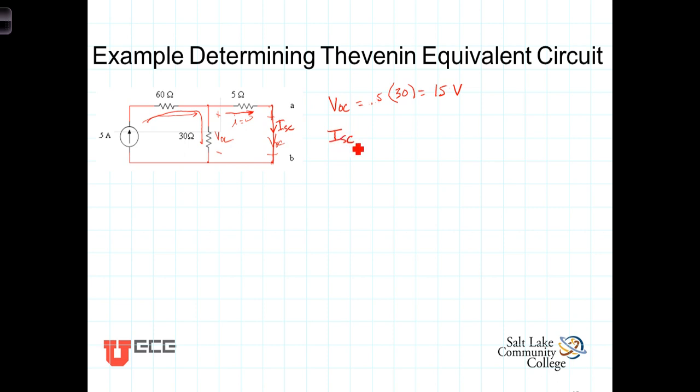So using current divider, we can calculate short circuit current directly. I short circuit is equal to 0.5 times, and remember from the current divider, the term that goes in the numerator is the resistance in the other branch. So that would be 30 ohms divided by the sum of those two, 30 plus 5 is 35 ohms. And we get then that the short circuit current is equal to 0.4286 amps. And then R Thevenin is equal to V open circuit divided by I short circuit, which is 15 divided by 0.4286, which equals 35 ohms. So, method one.